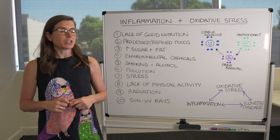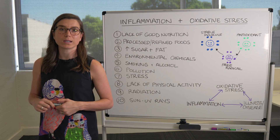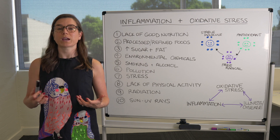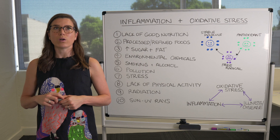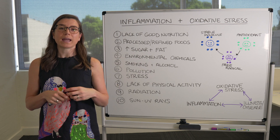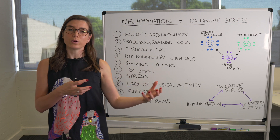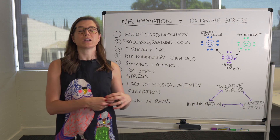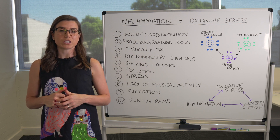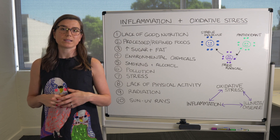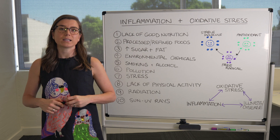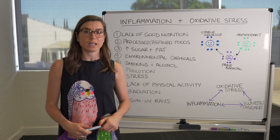So inflammation and oxidative stress — what exactly is oxidation? Oxidation is a normal process that occurs in our bodies as a result of chemical reactions taking place. If you think of an apple, it will undergo a certain amount of oxidation, then it ripens, and then there becomes too much oxidation and it becomes rancid or off. A little bit of oxidation is okay in our bodies — it actually helps to stimulate our immune system and can stimulate the growth of new cells. But when we get too much oxidation, it becomes an imbalance and can lead to inflammation, oxidation, and potentially disease or illness.